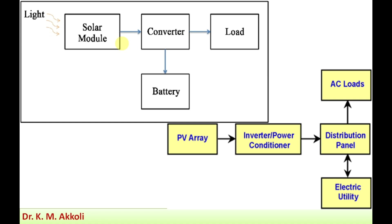That direct current cannot be used directly for applications, because all applications are designed for alternating current. So a converter is used, which converts the DC into alternating current. That AC can then be sent to a load for direct application, sent to a grid, or stored in a battery for later use.